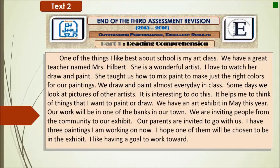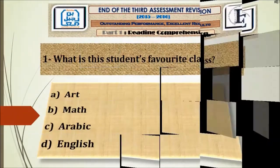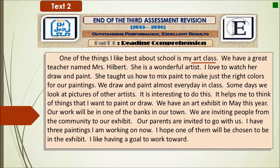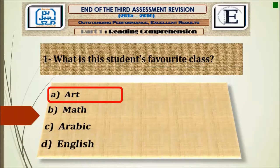Let's start the questions. Question number one: What is the student's favorite class — art, math, Arabic, or English? Looking at the text: 'One of the things I like best about school is my art class.' So it's obvious that the answer is art.